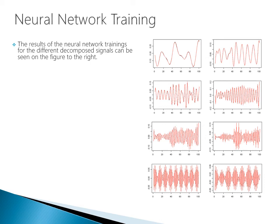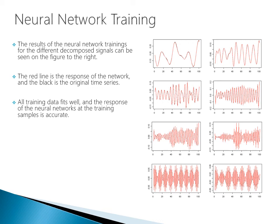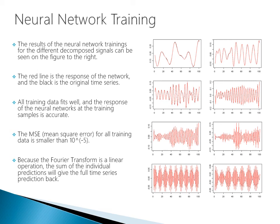The results of the neural network trainings for the different decomposed signals show the red line as the network's response and the black as the original time series. All training data fits very well and the response of the neural networks at training samples is accurate. The mean squared error for all training data is smaller than 10⁻⁵. Because the Fourier transform is a linear operation, the sum of the individual predictions gives the full time series prediction back.